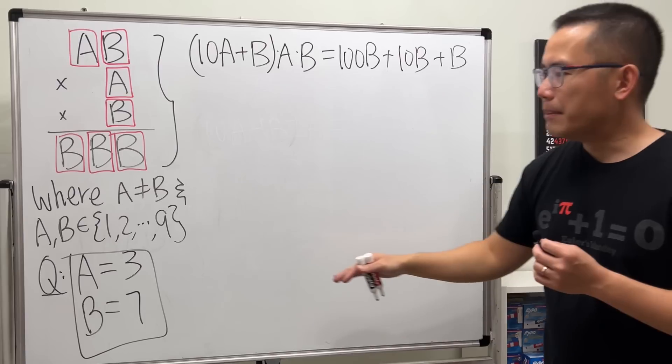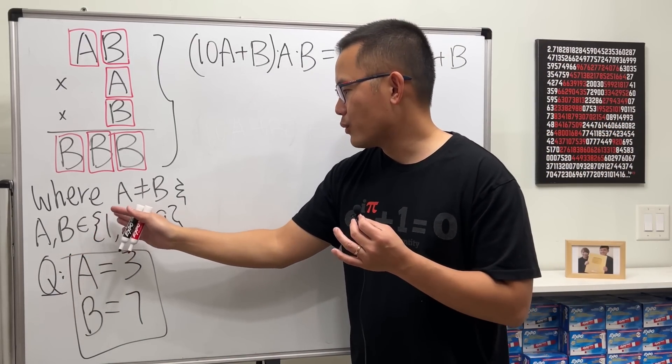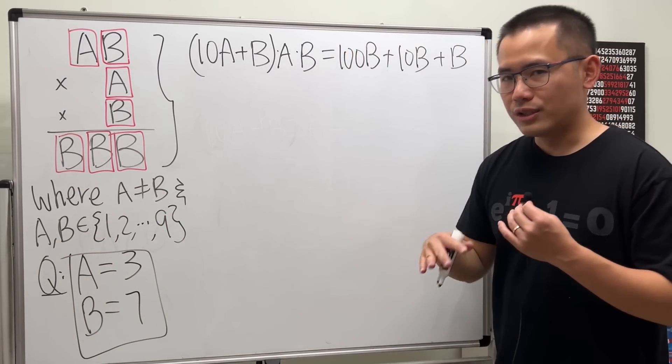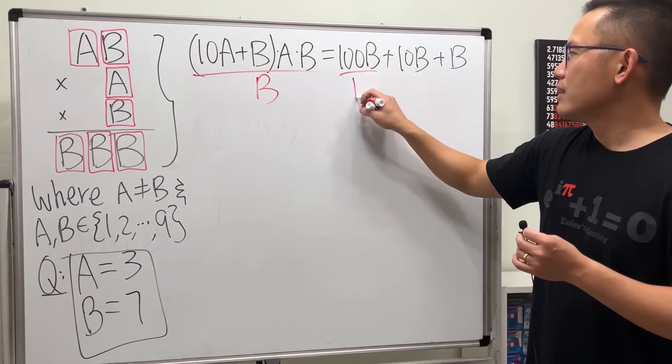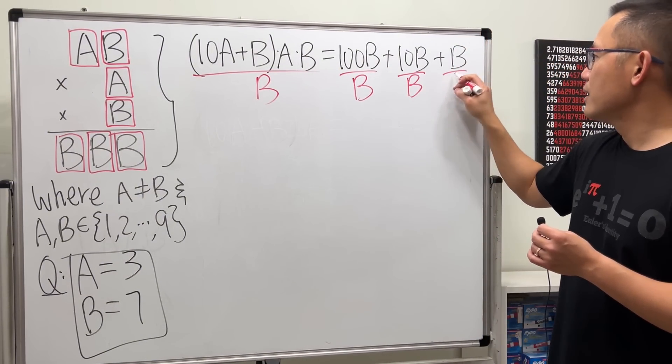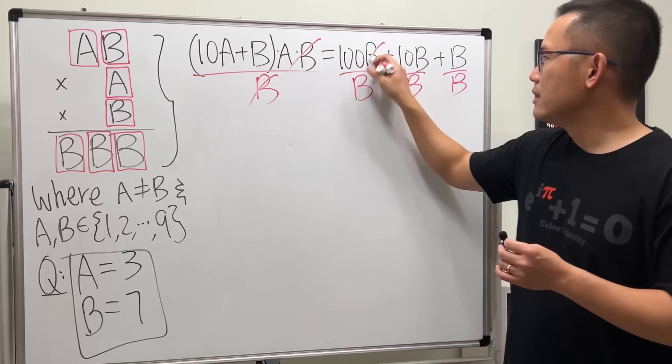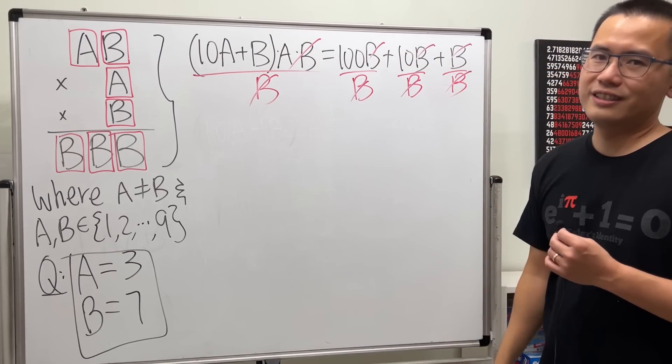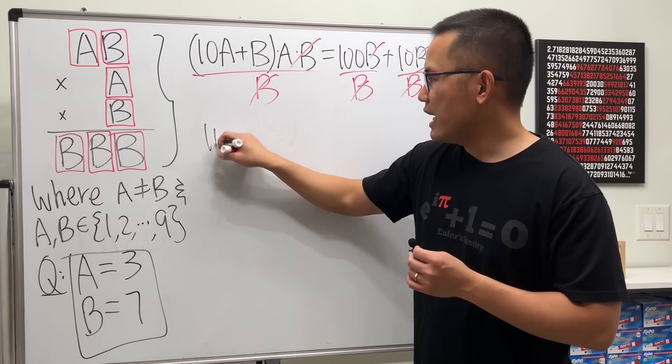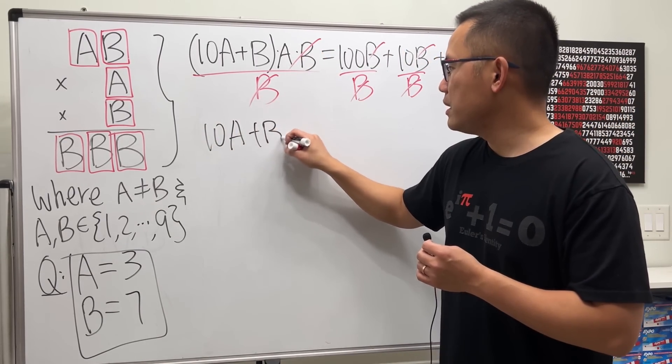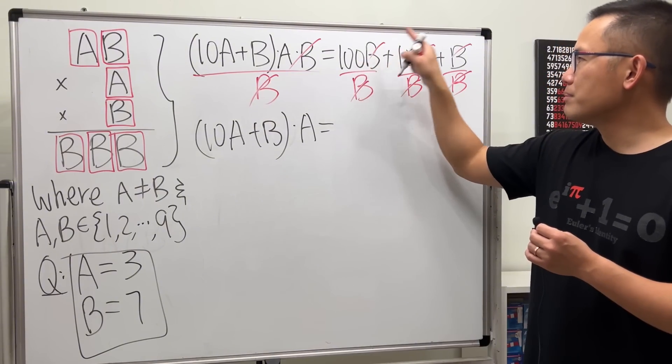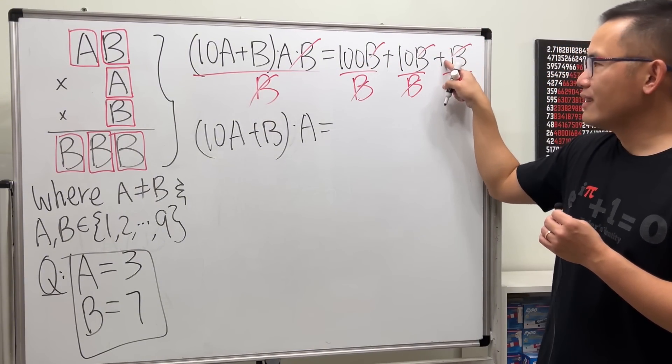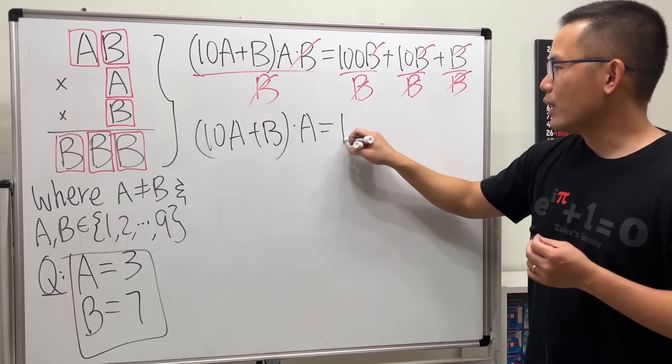Now we have B right here, right here, right here, and right here, and B is just a number, either one, two, three, four up to nine, not equal to zero. So we can just divide both sides by B. I divide everybody by B, they all cancel out. So we will get (10A + B) times A is equal to 100 + 10 + 1. There's a 1 right here so it's 111.